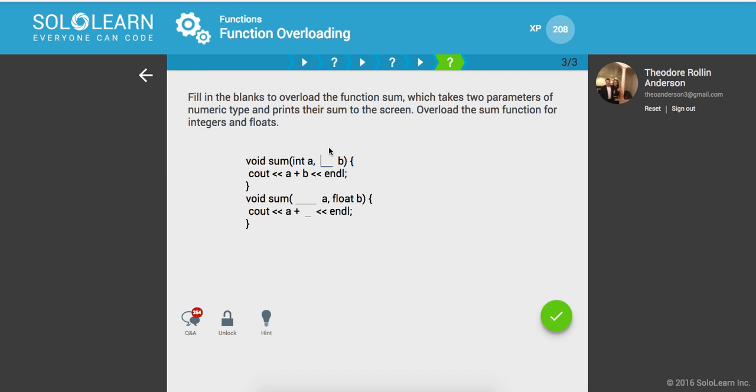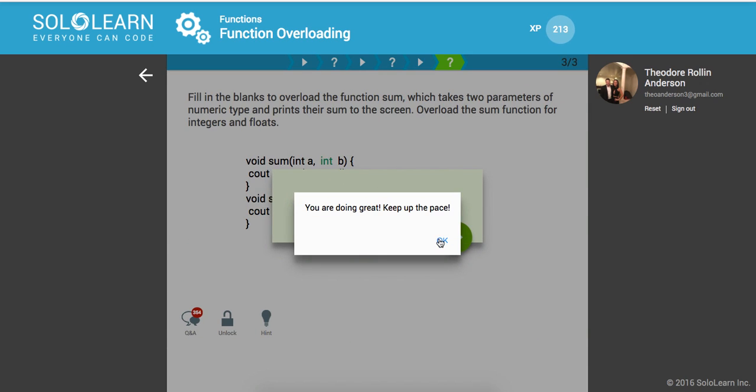So fill in the blanks to overload the function sum, which takes two parameters of the numeric type and prints their sum to the screen. Overload the sum function of integers and floats. So int a, int b, and float a, float b, and we're going to print out a plus b. Awesome.